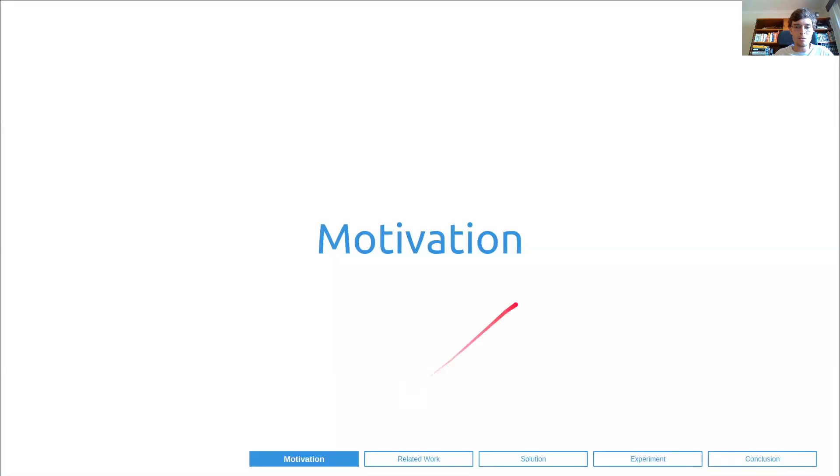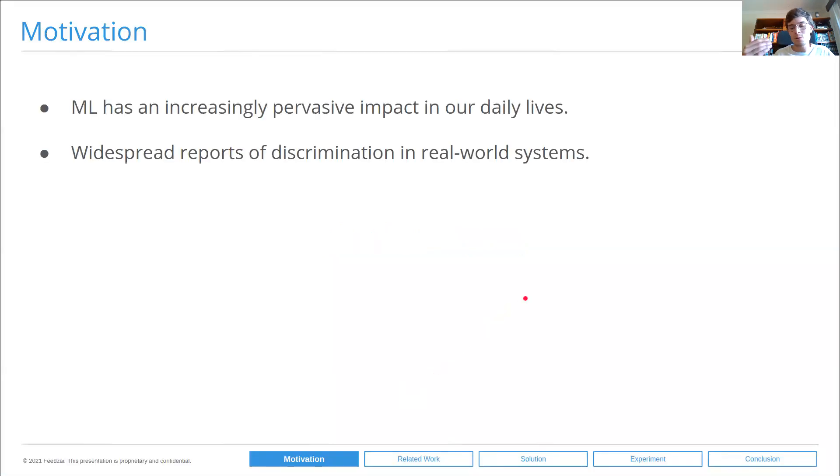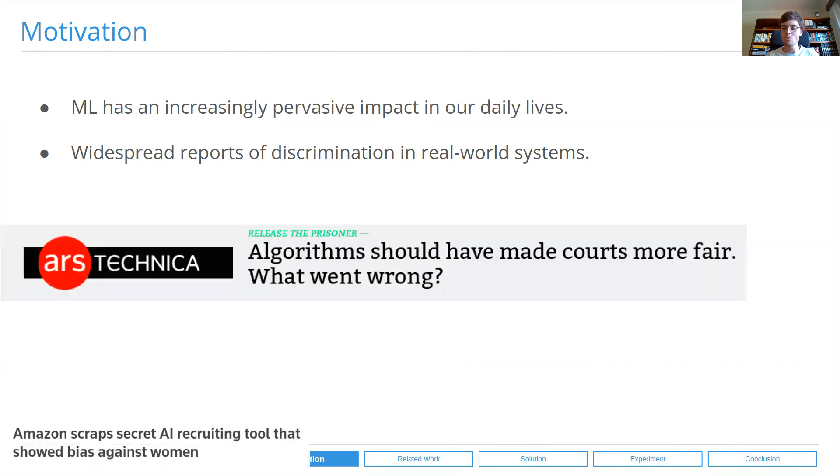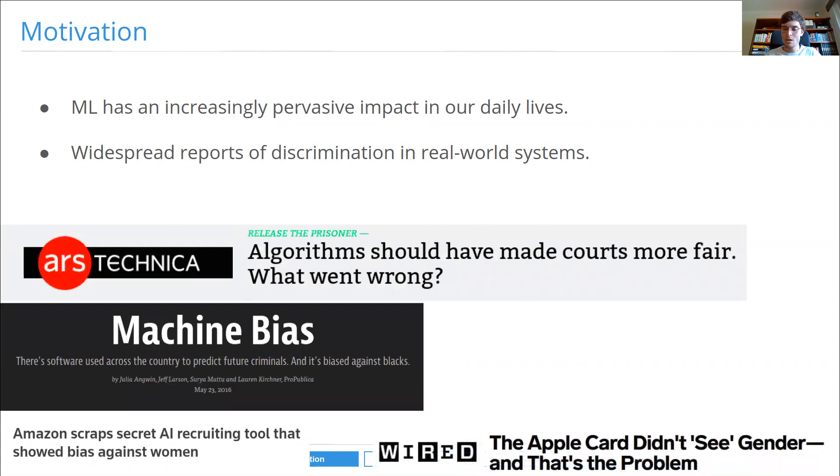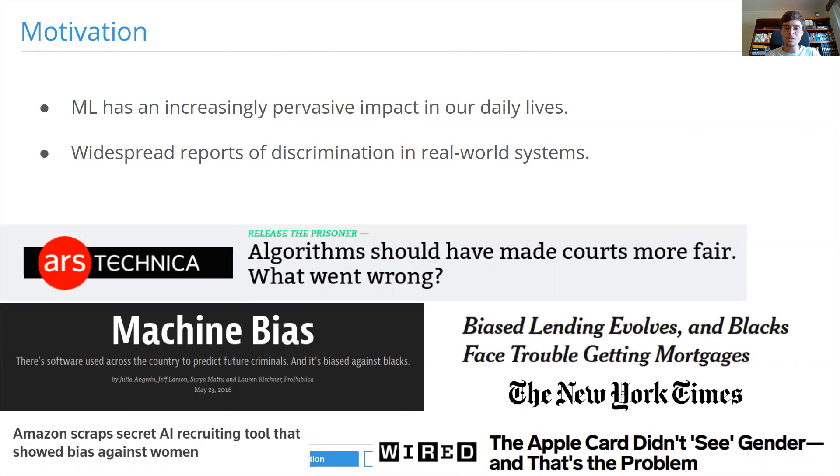Starting with our motivation, in recent years machine learning has had an increasingly pervasive impact in our daily lives. At the same time, we've witnessed widespread reports of discrimination from some of these real-world systems, from gender bias in CV screening tools to racial bias in recidivism assessment to gender bias in consumer lending or mortgage lending, among numerous other examples.